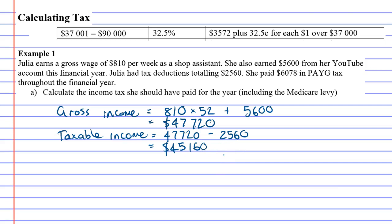When the tax office calculates Julia's tax, they're going to do it based on the forty-five thousand one hundred and sixty. I've copied a piece of the tax table — the income bracket that Julia's income falls inside of. Once you find which income bracket she's under, it tells you how to work it out on the right. Her tax is going to be three thousand five hundred and seventy-two dollars plus thirty-two point five cents for each dollar over thirty-seven thousand. The best way to do this is to work from the end backwards.